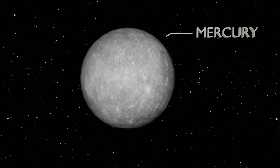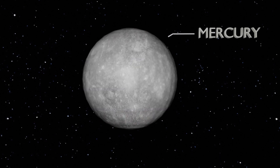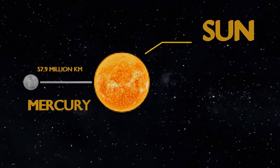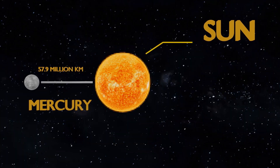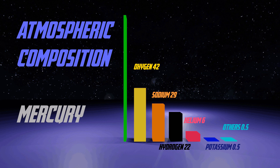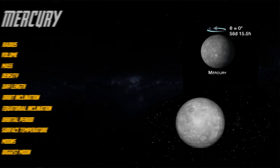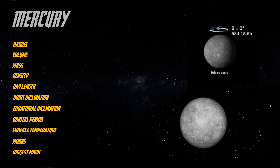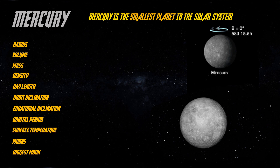Mercury is the nearest planet to the Sun, at 57.9 million kilometers from the Sun. Its atmosphere is mainly made up of oxygen, sodium, and hydrogen. Mercury is the smallest planet of our solar system.